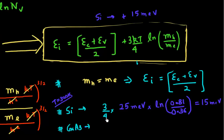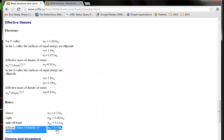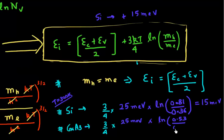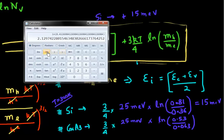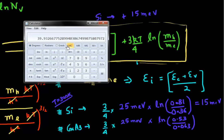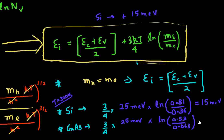I'll get the same formula: (3/4) × 25 milli-electron volts × ln(0.53 / 0.063). Note that in the case of gallium arsenide, the electrons have a much lower effective density of state mass and the holes have a much higher effective density of state mass. Evaluating this gives around 40 milli-electron volts.